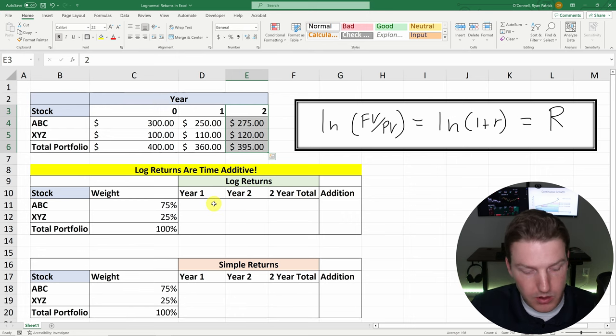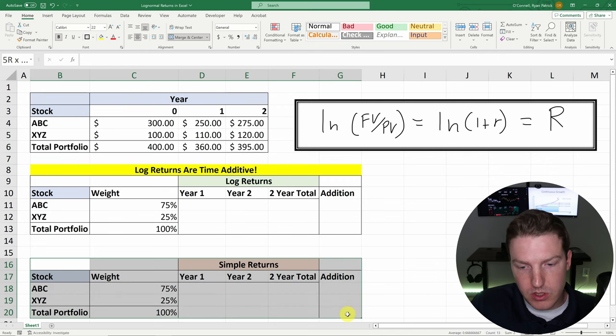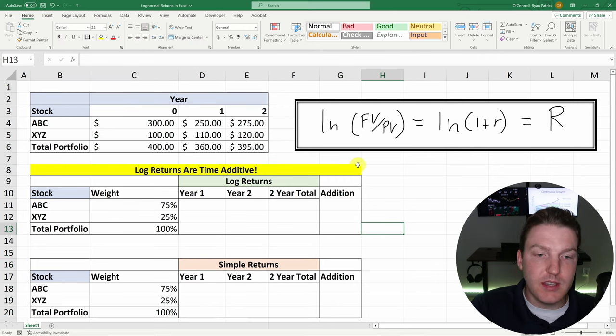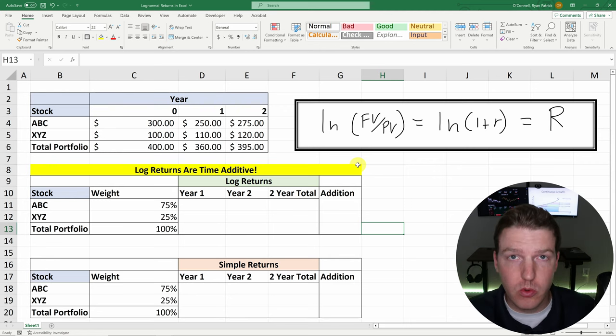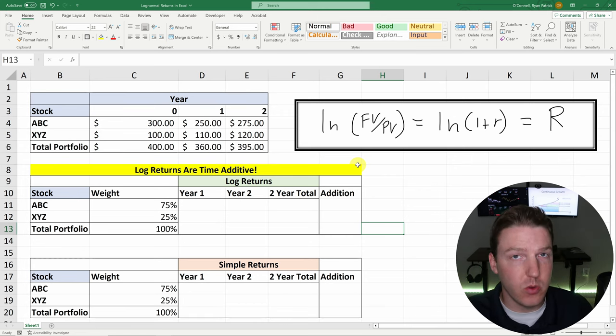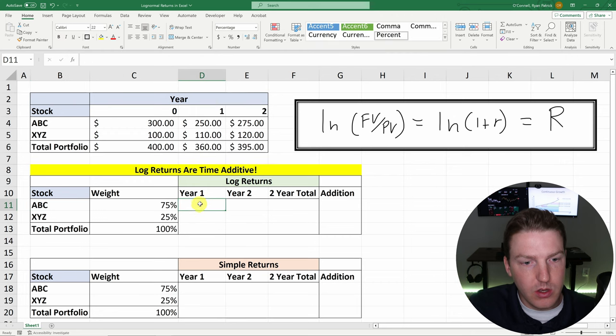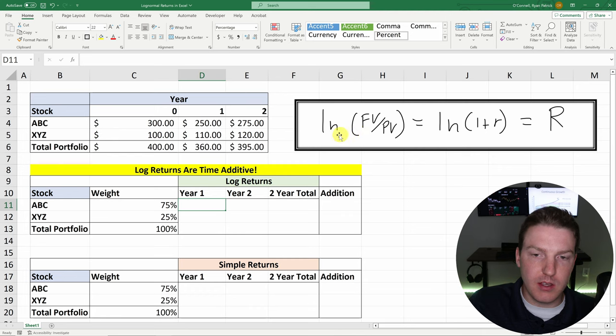Now we want to find how we did by taking the log returns in this table and the simple returns in this table. And the point I want to make is that log returns are time additive, which makes them extremely easy to work with. And this is why they're highly recommended with equity or stock valuations or models in finance. So let's go ahead and calculate these log returns. Stock ABC in year one, what was the log return? We figured out at the end of the conceptual aspect, this is what the log return is here. And it's equal to that continuously compounded rate.